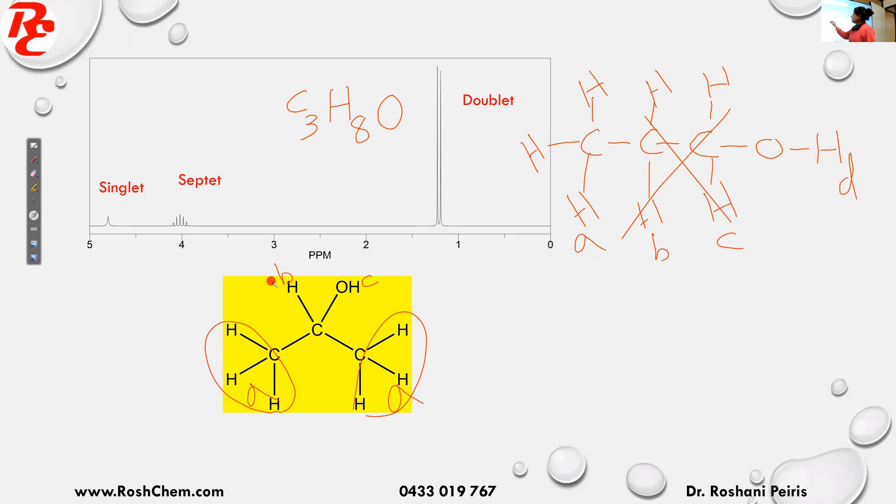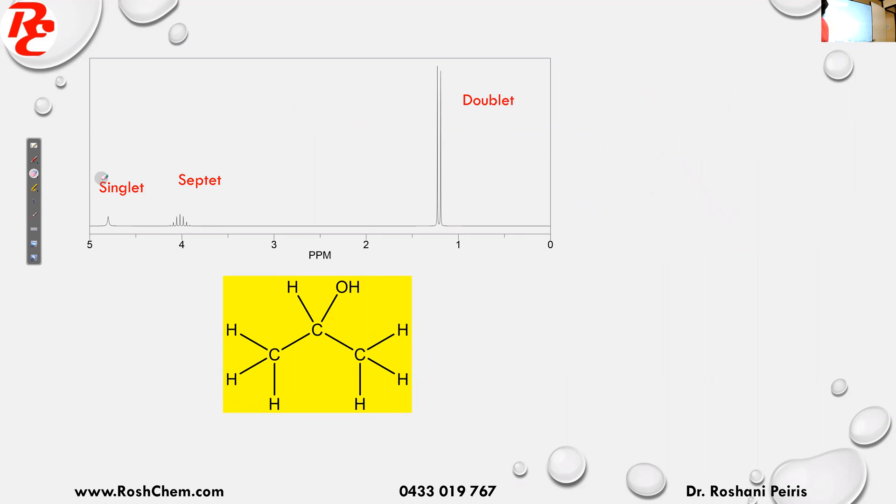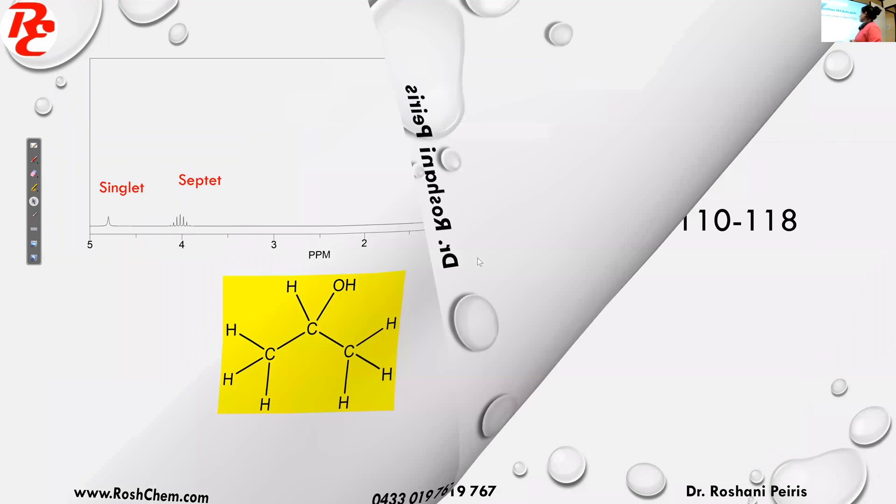Then peak B, this one, for this hydrogen, so it's on this carbon. It got two adjacent carbons. So both got six hydrogens in total. So therefore it's six plus one, seven. That's how you got a septet. So this is how you confirm a structure using all the information given.